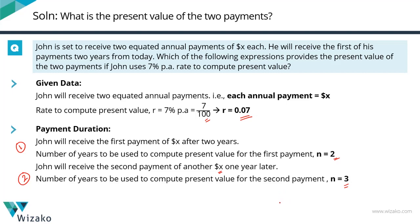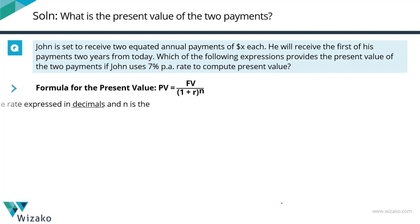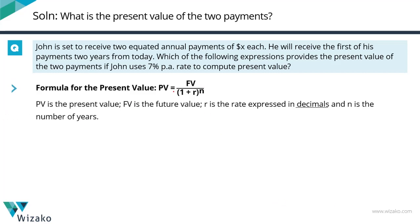Let's look at the formula for computing the present value and see how it ties in with the formula we use to compute compound interest. The present value formula is: future value divided by (1 + r) raised to the power of n. Future value in our case is X dollars for each payment, r is 0.07, n for the first payment is 2, and n for the second payment is 3.